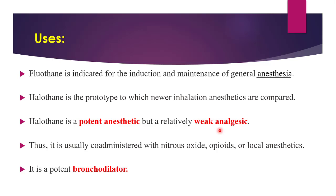Since Halothane is a weak analgesic, it is usually co-administered with nitrous oxide, opioids, or local anesthetics to first achieve analgesia. It is also a potent bronchodilator. Halothane relaxes both skeletal and uterine muscle, so it can be used in obstetrics for uterine relaxation.